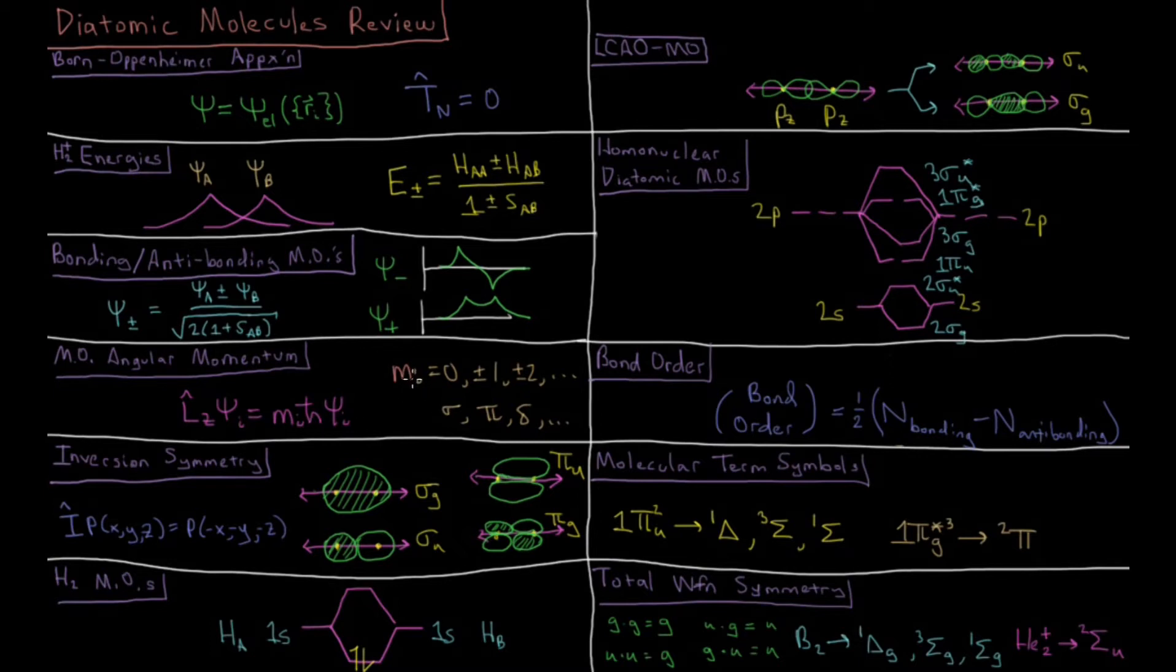And these eigenvalues that you can result in terms of m are zero, plus or minus one, plus or minus two, etc. And these give rise to classification of orbitals as either sigma orbitals, pi orbitals, and then even more exotic things like delta orbitals, etc. beyond that.